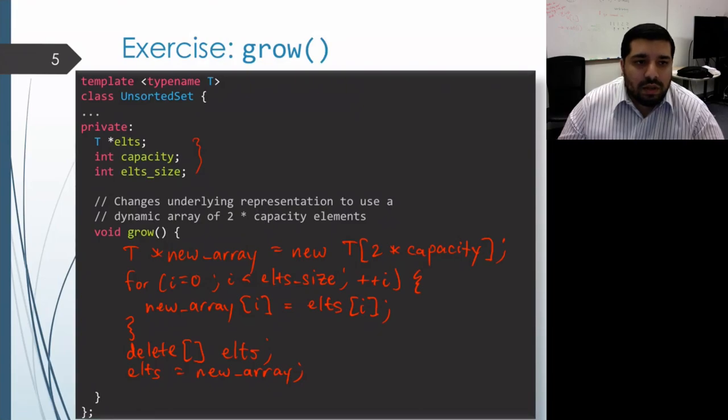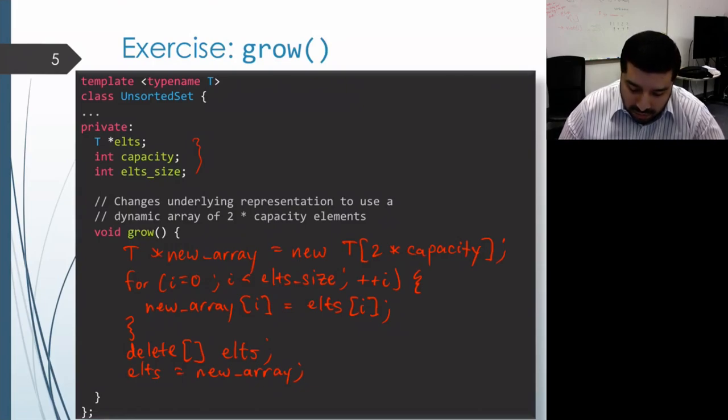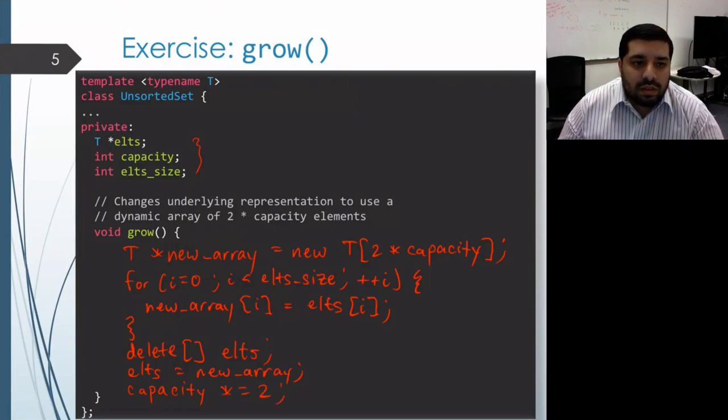And then one more thing that we need to do is we need to actually modify the capacity data member to reflect the fact that we now have an underlying array that has twice the capacity as before. So we'll go ahead and set capacity to be twice what it was before. And then we're done.